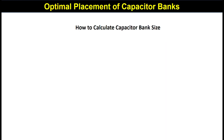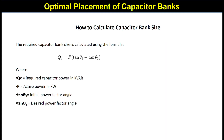How to calculate capacitor bank size. The required capacitor bank size is calculated using the formula: QC (the rating of the capacitor bank) = P (the active power) × (tan θ1 − tan θ2), where θ1 is the initial power factor angle and θ2 is the target power factor angle.